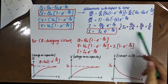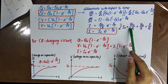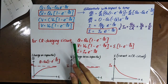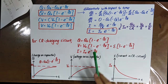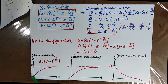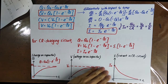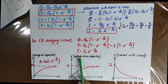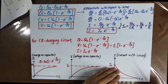For the CR charging circuit, you get these three formulas which you can plot on different graphs. Q is increasing, V is also increasing, and the current is decreasing. Q is the charge on the capacitor, V is the voltage across the capacitor, and I is the current in the CR circuit.